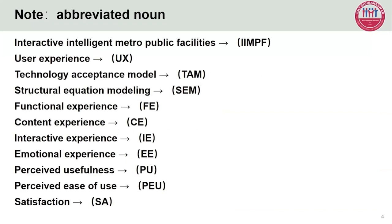Here we have labeled the abbreviated usage of all nouns. This includes Interactive Intelligent Metro Public Facilities, abbreviated as IIMPF. You can learn about all the abbreviations that appear in the paper here.